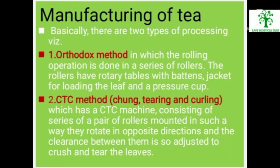Manufacturing of Tea. There are two types of processing. First, the orthodox method, in which the rolling operation is done in a series of rollers. The rollers have rotatory tables with buttons jacket for loading the leaf and a pressure cup. Second, the CTC method — Crush, Tear and Curl method — which has a CTC machine consisting of a series of pairs of rollers notched in such a way that they rotate in opposite directions, with the clearance adjusted to crush and tear the leaves.